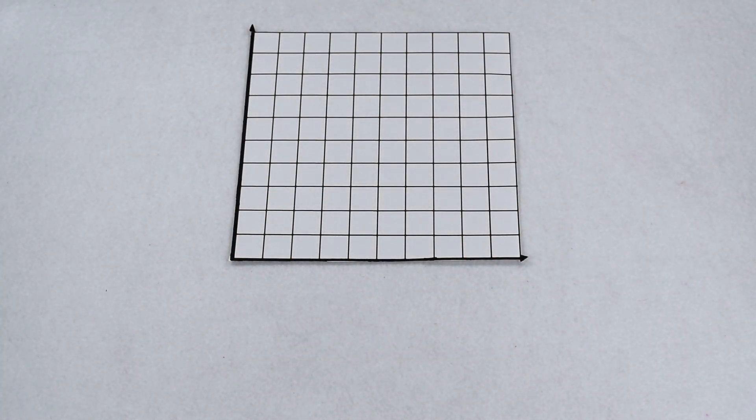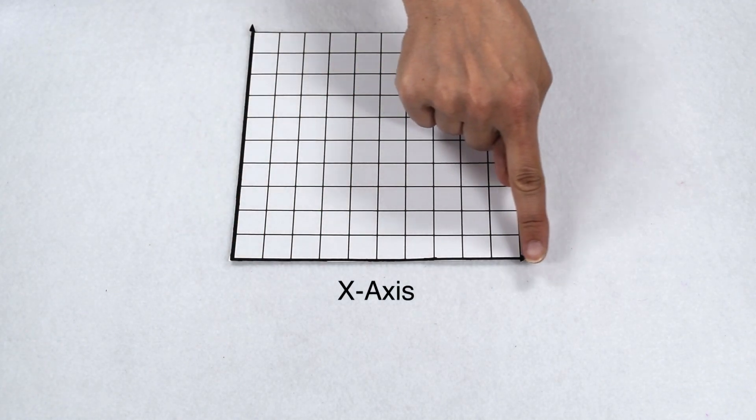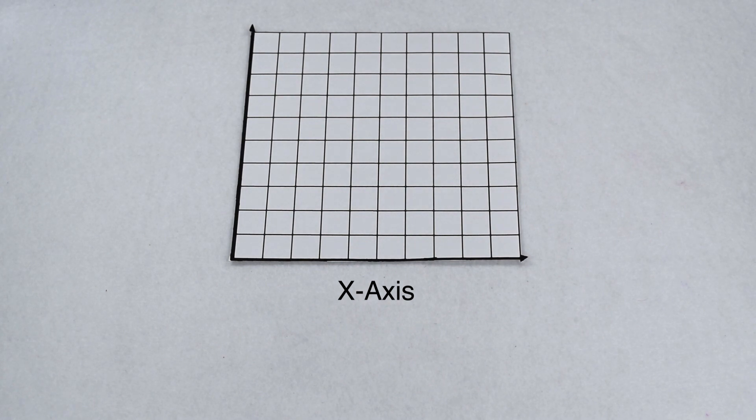The first thing we need to do is identify our x and y axis. Our x axis is our horizontal axis that runs left to right. Our y axis is our vertical axis that runs up and down.